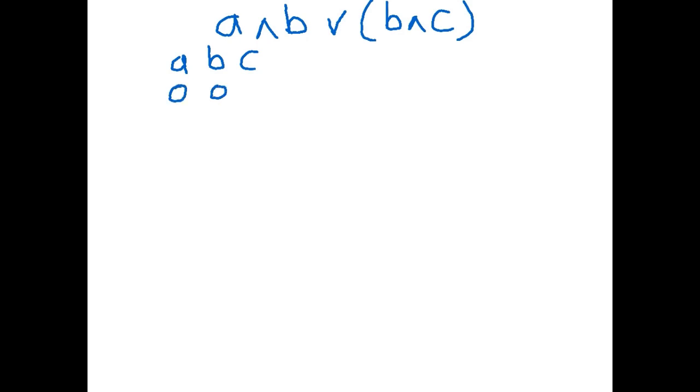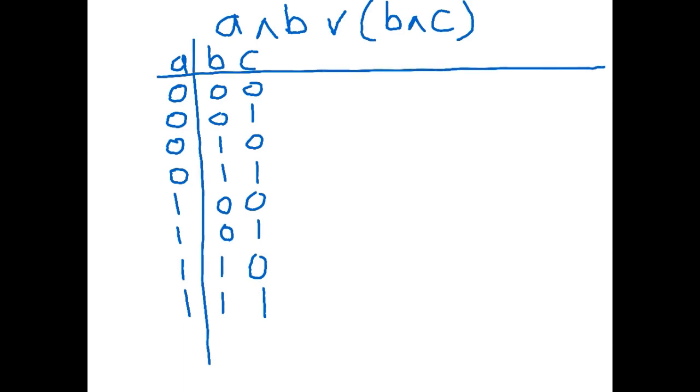So a binary 0, binary 1, binary 2, binary 3, binary 4, 5, 6 and 7. Now I'm going to put all my lines in there.